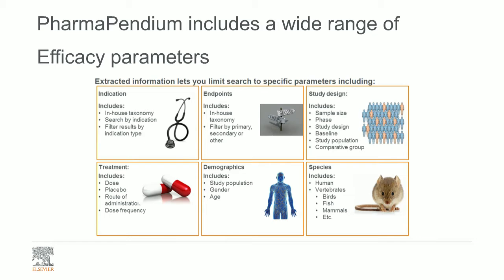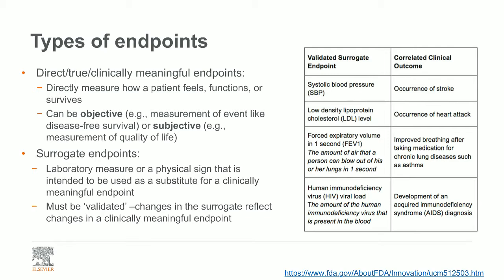Just before we dive into the next example, there are multiple types of endpoints, and both types are extracted in PharmaPendium. There are what we call direct, true, or clinically meaningful endpoints — endpoints that refer directly to how a patient feels, functions, or survives, which can be both objective or subjective. There are also surrogate endpoints — a laboratory measurement or physical sign used as a substitute for a clinically meaningful endpoint. Sometimes there are no good direct clinical endpoints, and we need to work with a substitute, but it's important that endpoint is validated.